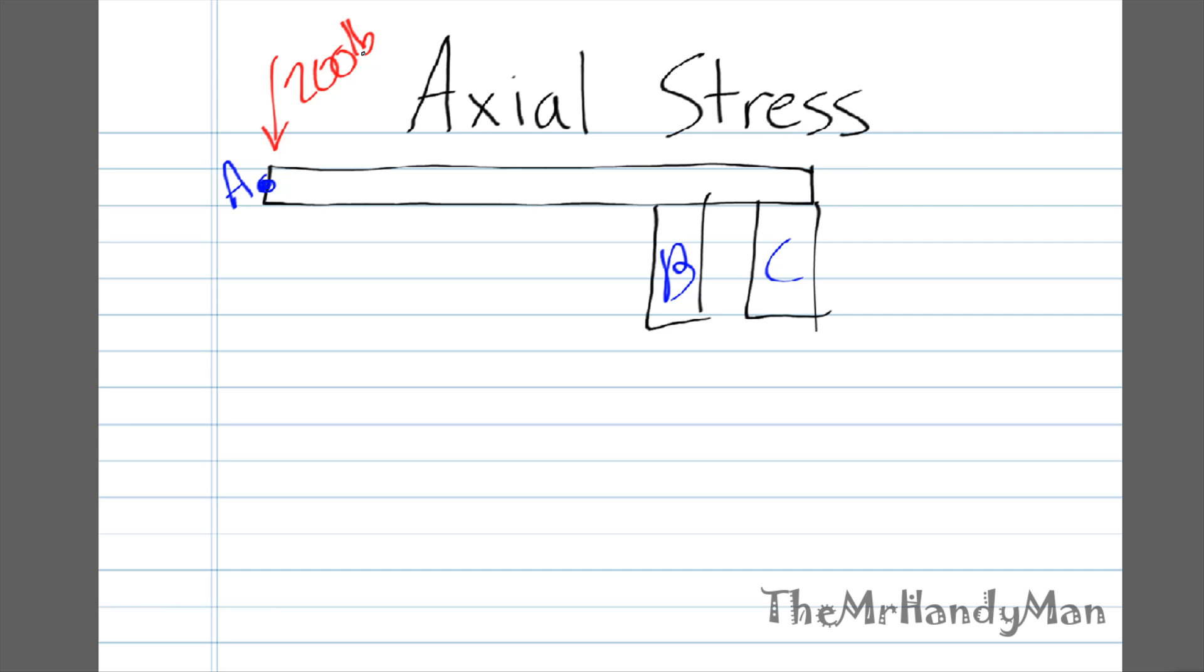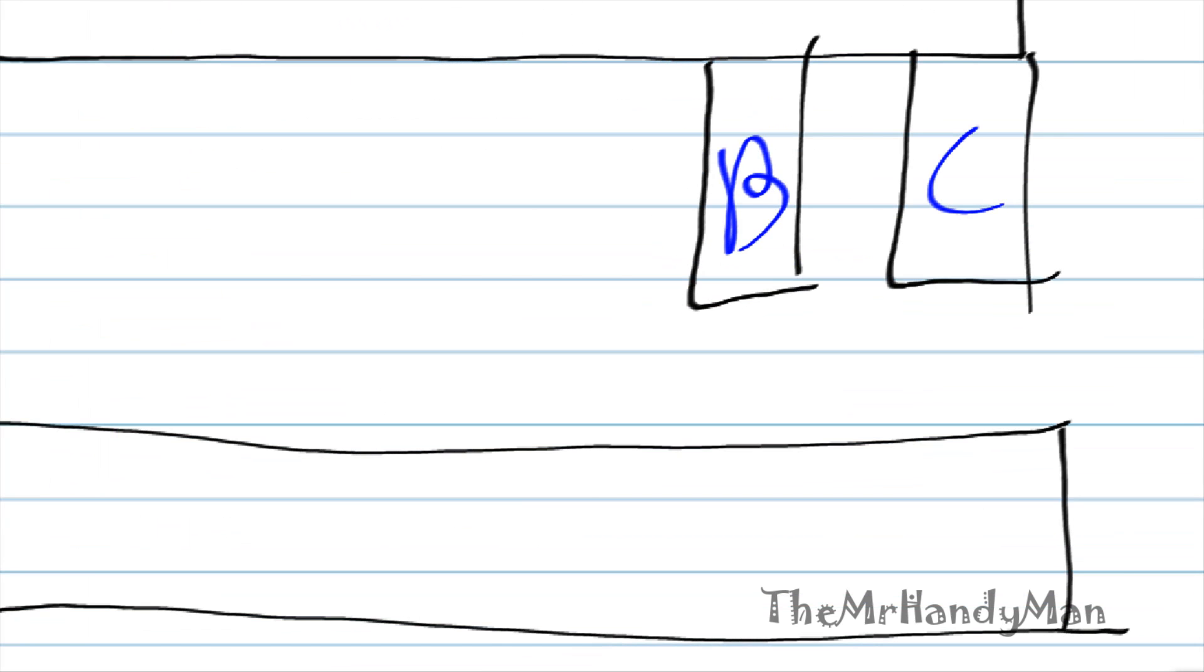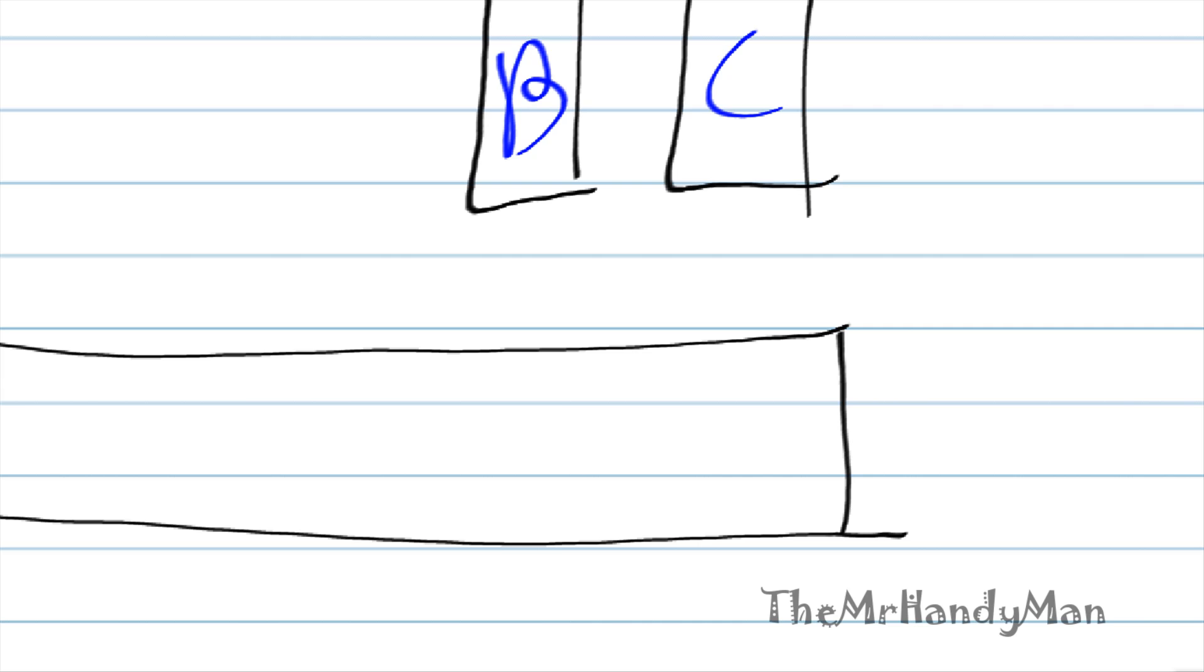First of all, we need to know areas. To calculate the stress in both beams B and C, or supports B and C, we need to know the areas. Just to give us an indication of that, I'm going to draw us a nice little top view of the board and then the layouts of each support. First of all, support B is going to be something like this.